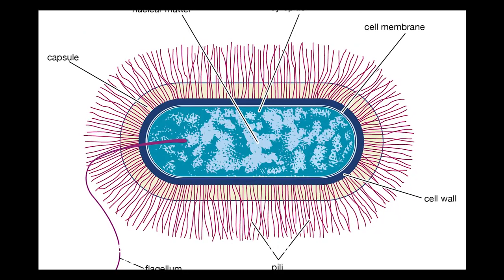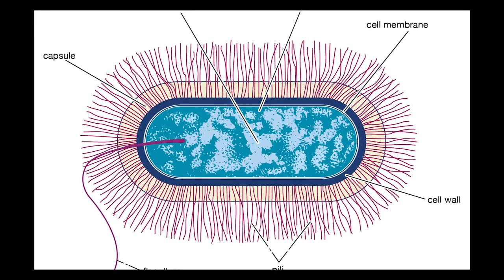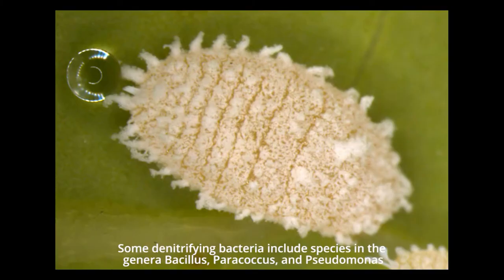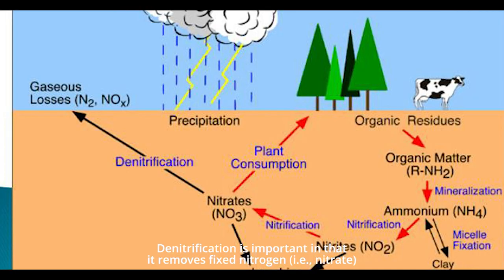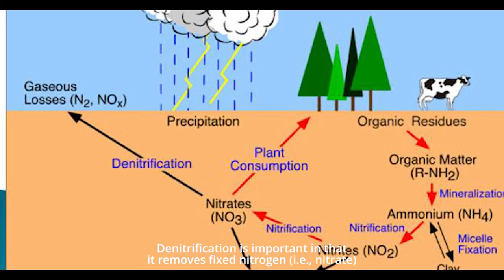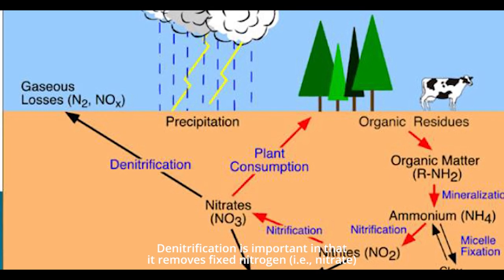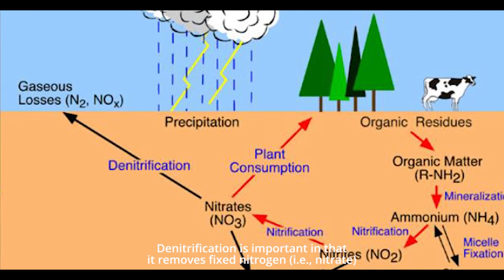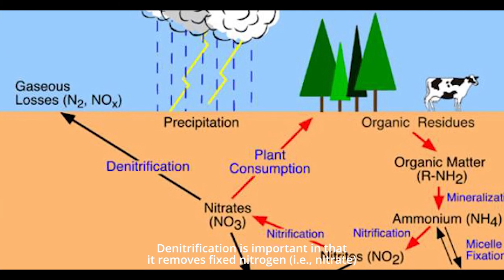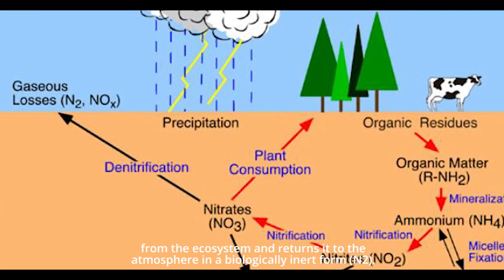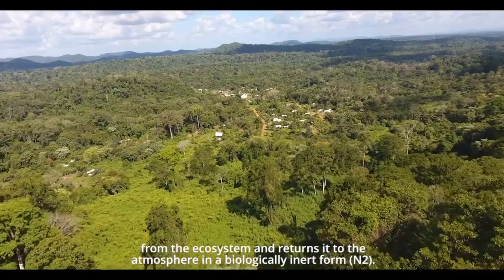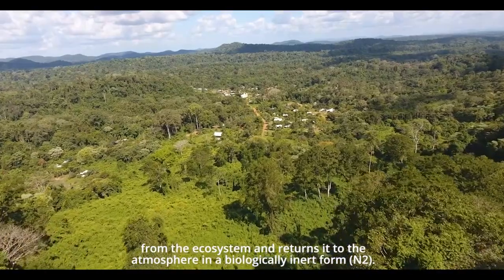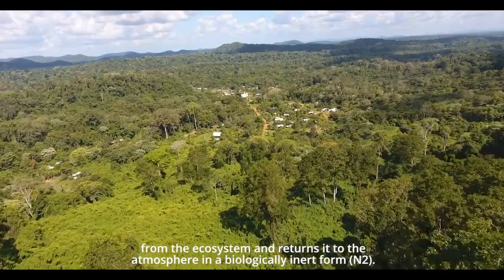Some denitrifying bacteria include species in the genera Bacillus, Paracoccus, and Pseudomonas. Denitrification is important in that it removes fixed nitrogen — i.e., nitrate — from the ecosystem and returns it to the atmosphere in a biologically inert form, N2.